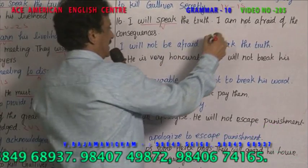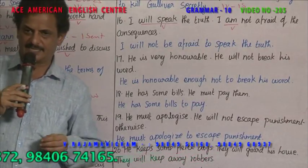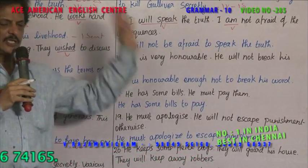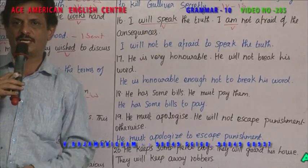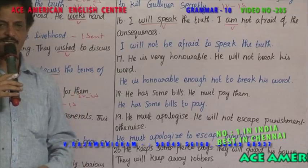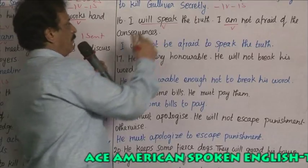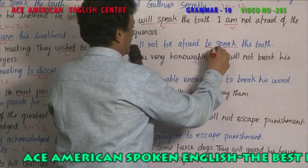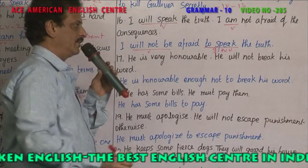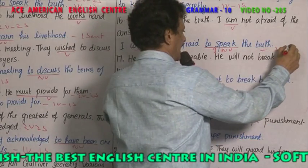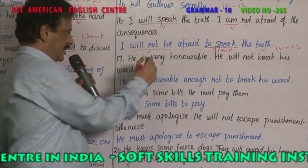Example 11: 'I will speak the truth' — 'will speak' is the verb. 'I am not afraid of the consequences' — 'am' is the verb. The consequences means the results. Combined: 'I will not be afraid to speak the truth.' 'Will speak' changes to 'to speak,' an infinitive. 'Will not be' is the single verb. One verb, one sentence.